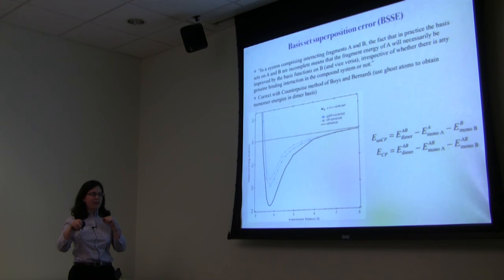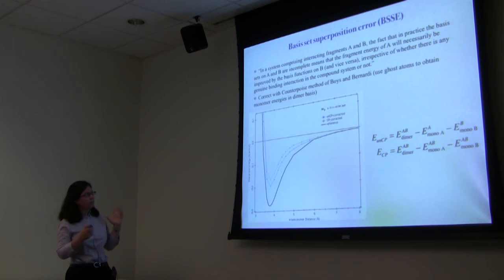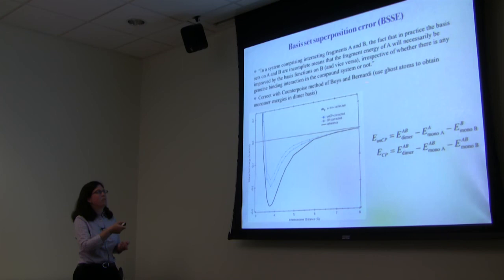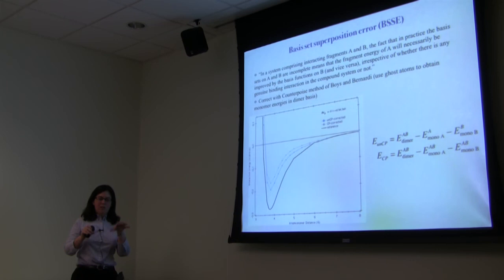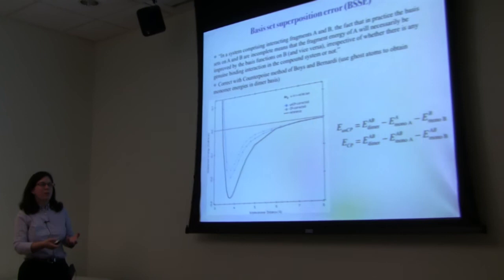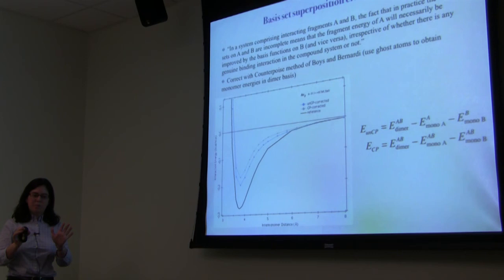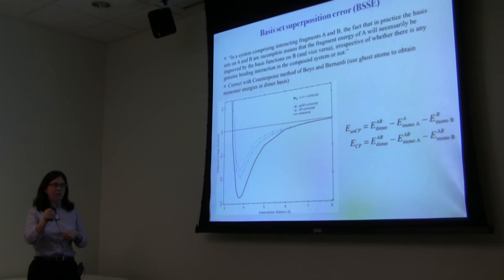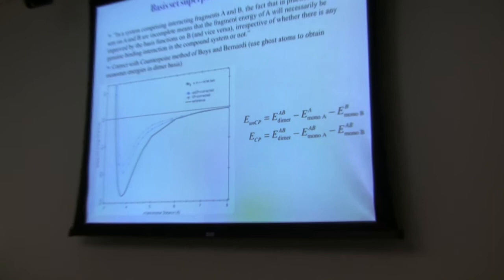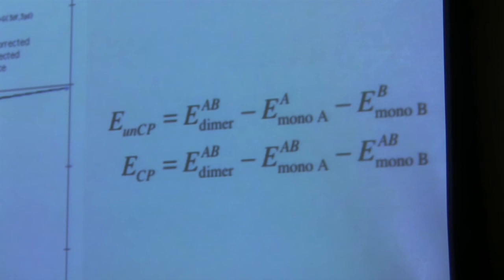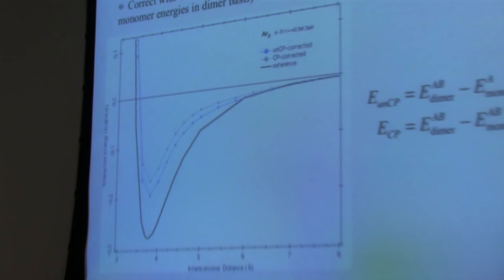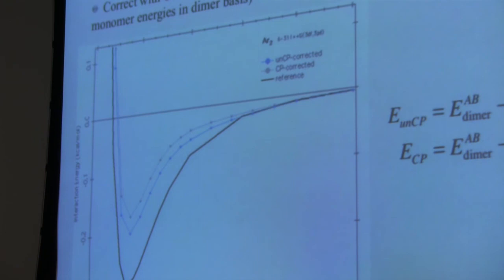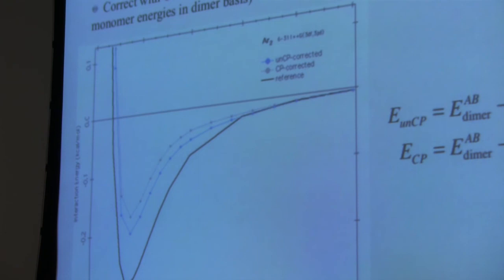When you then do the monomer calculation alone, those extra basis functions aren't there, giving rise to BSSE. The way to alleviate this is the counterpoise correction of Boys and Bernardi, which involves placing ghost atoms: the monomer calculation is done with all the same basis functions present as in the dimer — the full AB basis set, not just A or B alone. The counterpoise-corrected interaction energy is not as deep as the uncorrected one. This problem is mainly with smaller basis sets; as you increase basis set size, you don't need to worry as much.